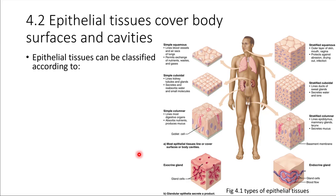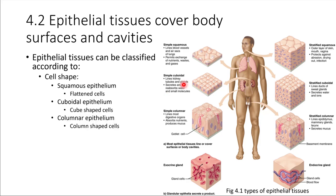The first way to classify epithelial tissue is by cell shape. Flattened cells are called squamous epithelial cells. The ones that look like little cubes are called cuboidal epithelium. And finally, the tall stretched cells are called columnar epithelial cells — each cell looks like a little column.